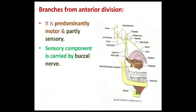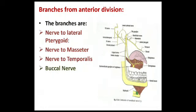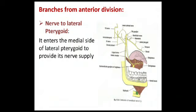Coming to the branches of the anterior division — it is predominantly motor and partly sensory. The main sensory component is carried by the buccal nerve. The motor branches are nerve to masseter and nerve to temporalis, while the sensory component is the buccal nerve. The nerve to lateral pterygoid, as the name implies, supplies the lateral pterygoid.